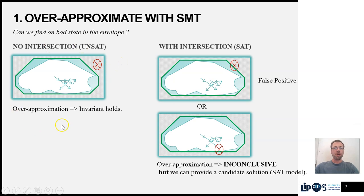Then we can reason between the intersection of the envelope and the bad states. So if we are lucky and the envelope does not intersect the bad states, we have actually proved that the invariant holds. Otherwise, we're not really sure because it could be a false positive or it could actually be a true violation of the invariant.